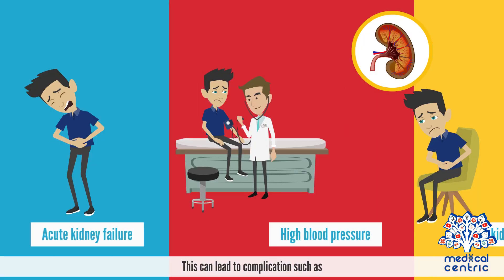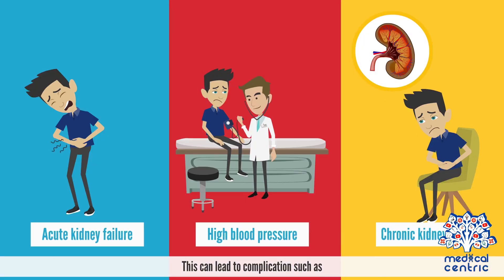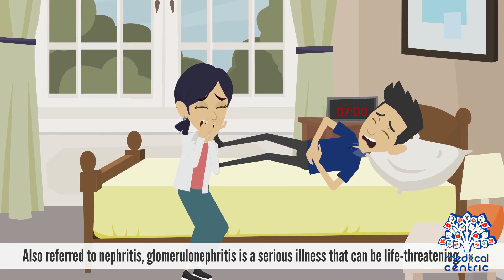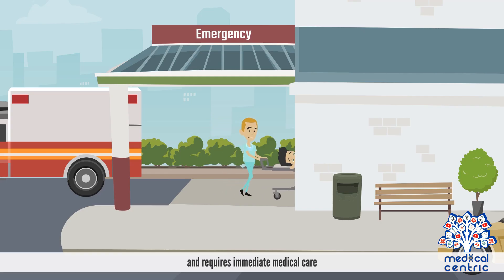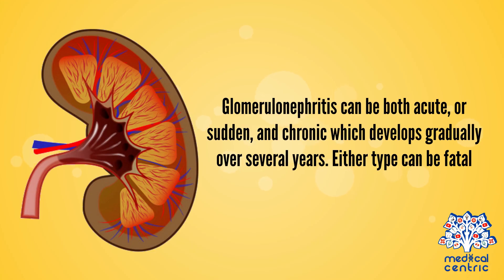This can lead to complications such as acute kidney failure, high blood pressure, or chronic kidney disease. Also referred to as nephritis, glomerulonephritis is a serious illness that can be life-threatening and requires immediate medical care. It can be both acute (sudden) and chronic, developing gradually over several years, and either type can be fatal.